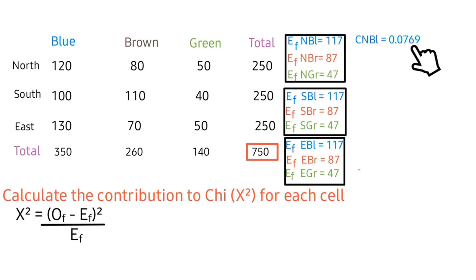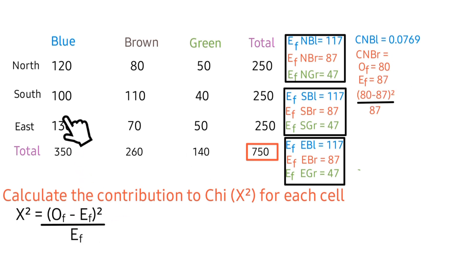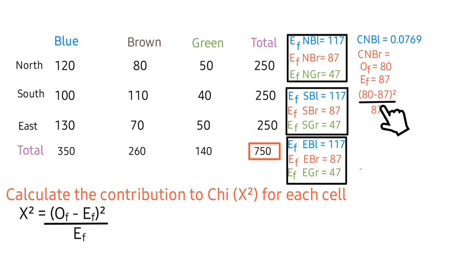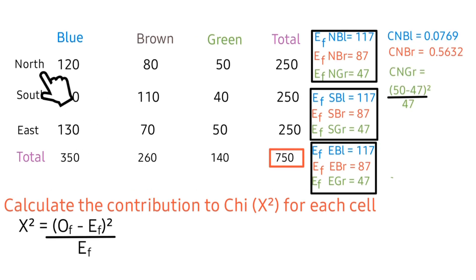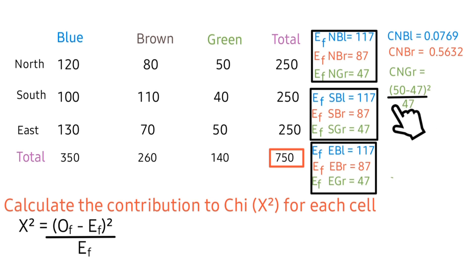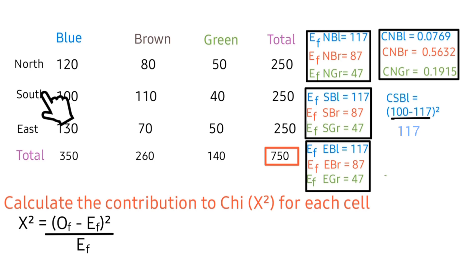That gives a small value. For individuals in the northern region with brown eye color, the observed frequency is 80 minus the expected frequency of 87, all squared divided by 87, giving this value. For the northern region with green eye color, the observed frequency is 50 minus the expected frequency of 47, all squared divided by 47. For individuals in the southern region with blue eye color, the observed frequency is 100, minus the expected frequency.